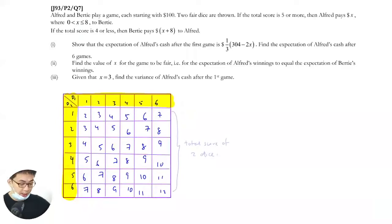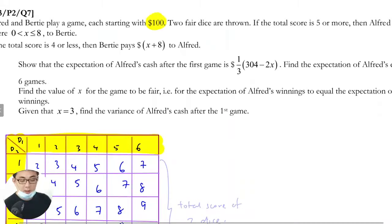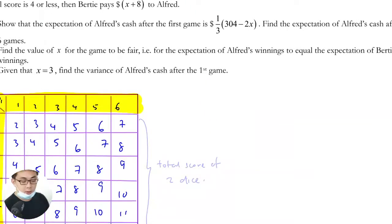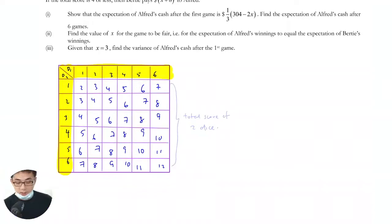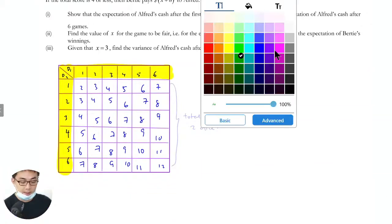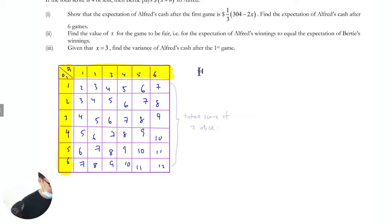The first thing is I am going to let A be the gain in a game for Alfred. Meaning I don't talk about the hundred bucks. I talk about the gain because it starts with a hundred dollars. Every time they play, there's a transaction between Alfred to Bertie. So that transaction is what I am keen to find out. I'm going to let A be the profit of Alfred in a game.